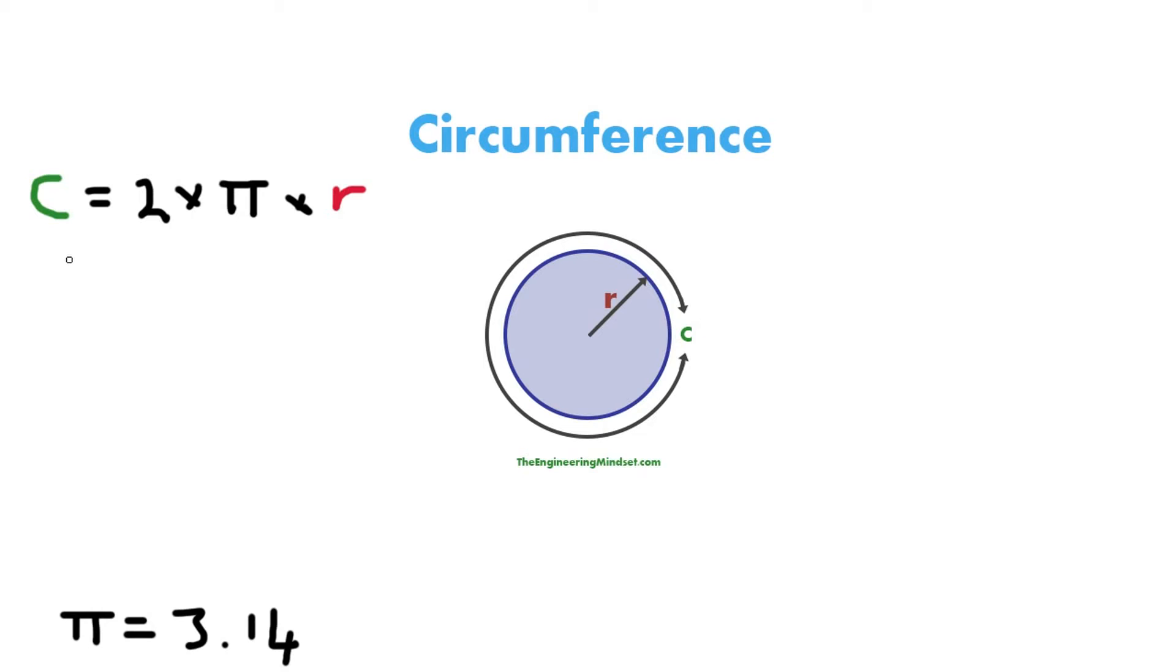So circumference C equals 2 times 3.14 times the radius. And let's say the radius in this example is 1 meter.